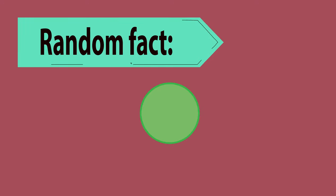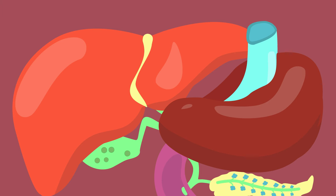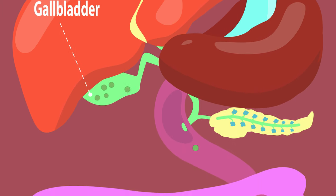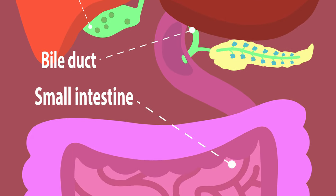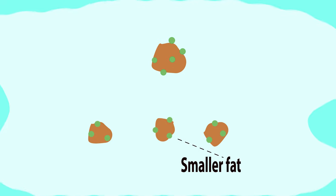To end with a random fact: the bile is green in color, and it's this that makes your poop brown. In this video, we've learned that bile is produced in the liver and stored in the gallbladder. From here, it's released down the bile duct into the small intestine, where it divides big globules of lipids into smaller droplets. This increases the surface area of lipids available for the lipid-digesting lipase enzymes to work on.